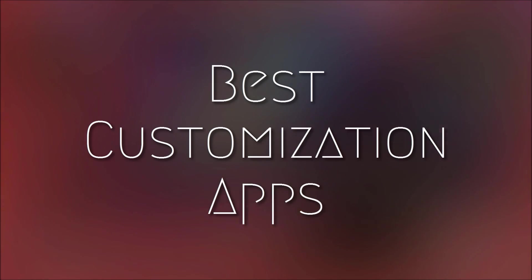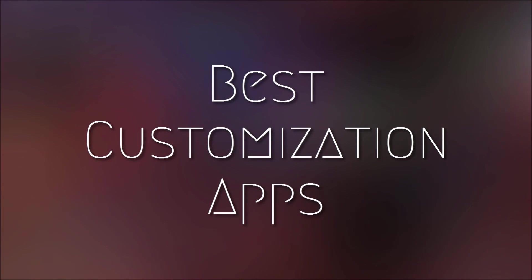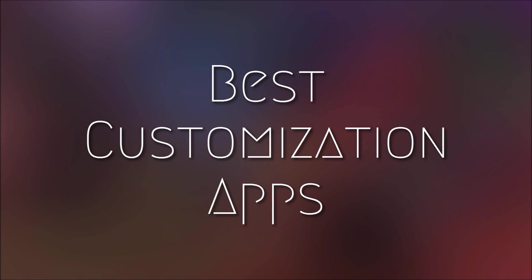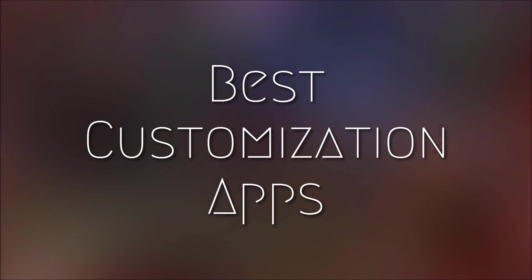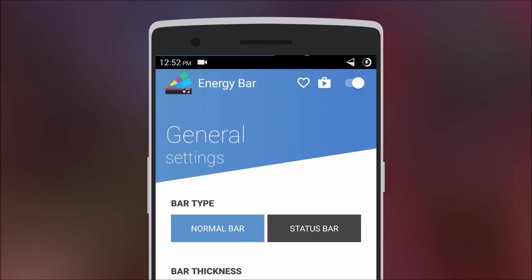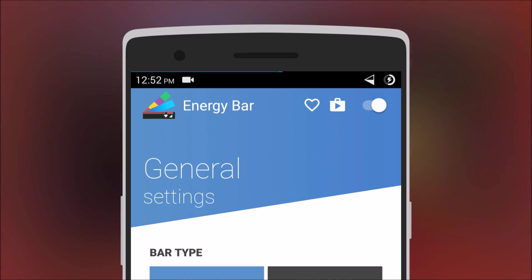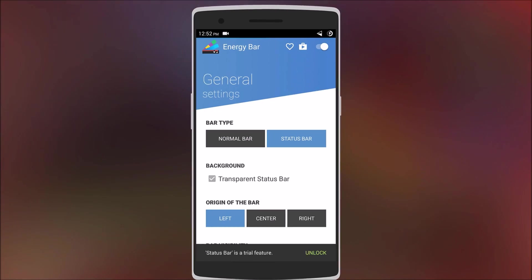Hey, what's up guys! Today me and a few of my friends will be showing you how you can step up your Android game with some awesome customization apps. Let's get started. The first app is Energy Bar — it basically adds a thin line to your status bar to show your battery life.